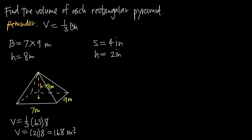So I get 168 cubic meters. These units make sense because we're dealing with volume, so we're always going to get cubic units. The units on the 63 are meters squared since we're talking about area, and the units on the eight are meters since we're talking about the length of the altitude. Meters squared times meters gives us meters cubed, so we end up with 168 cubic meters as the volume of this pyramid.